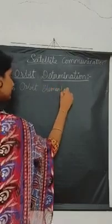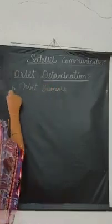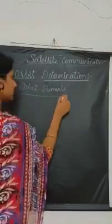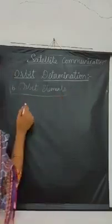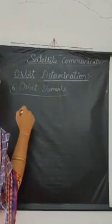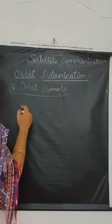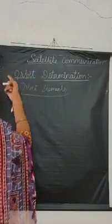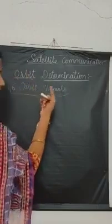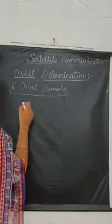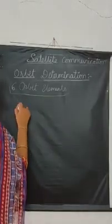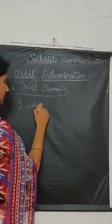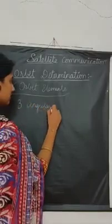Now we have all six orbit elements. We can do local code measurements. We can see the satellite in orbit and easily create an orbit. We can now take three angular measurements.